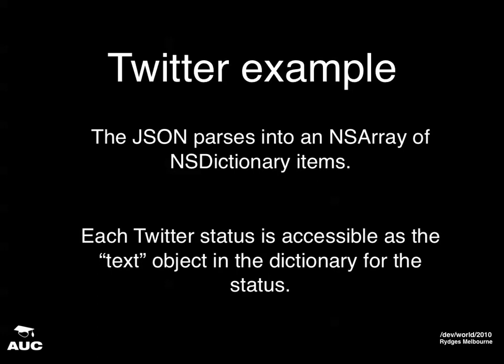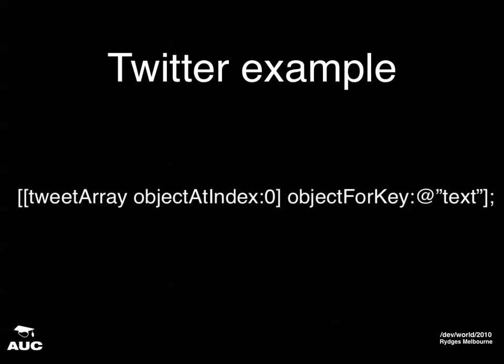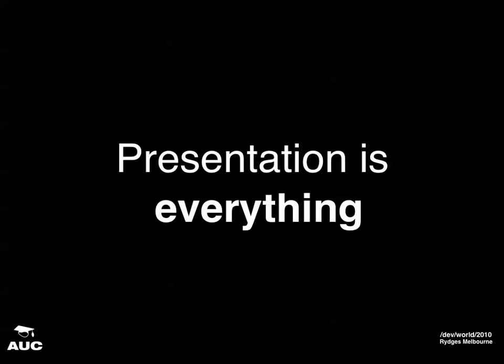Each status in each NSDictionary is listed under the 'text' key — that's one of those string name-value pairs in the big list. To grab that one out, we grab the object at the first index off the array and use objectForKey, just like accessing a normal dictionary, to grab whatever's in the 'text' key. Hopefully that means we can display that on screen for our users. But presentation is everything, so you have to find some way of displaying this nicely.